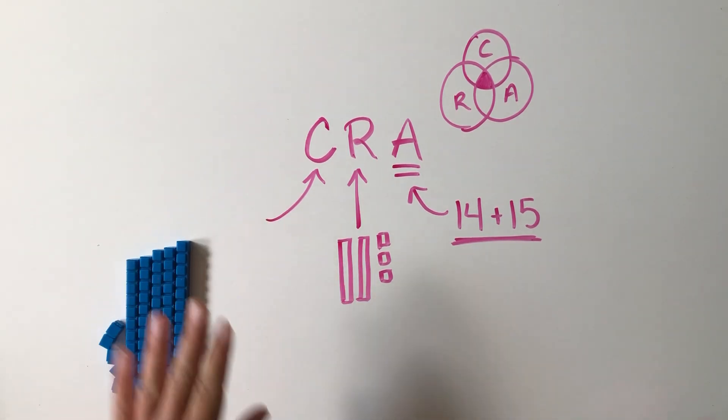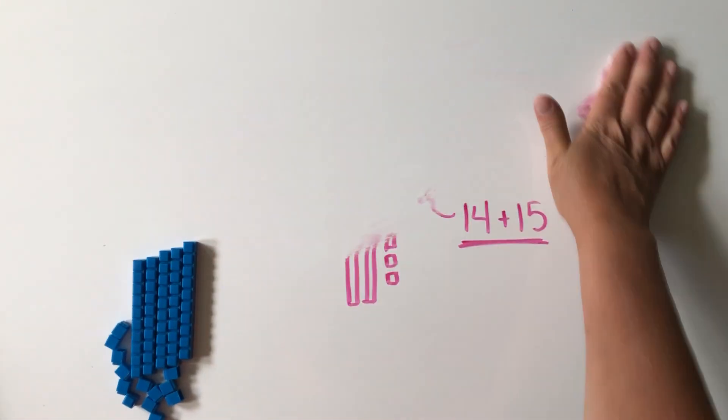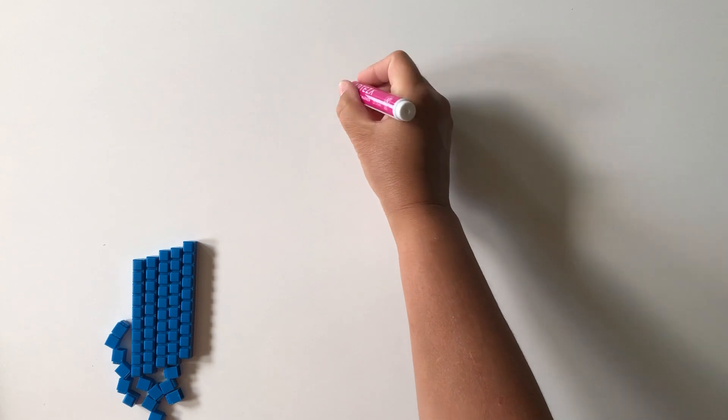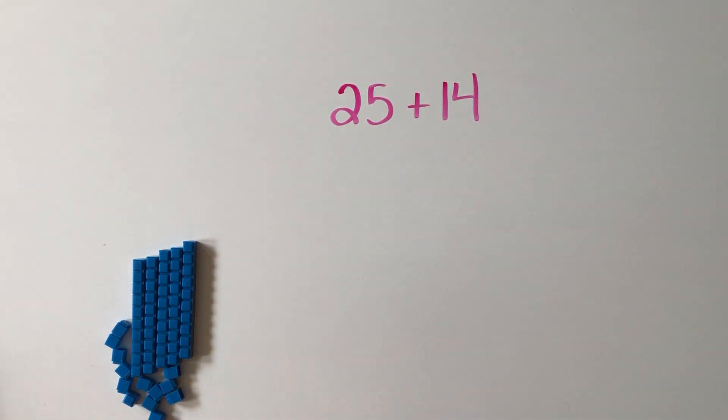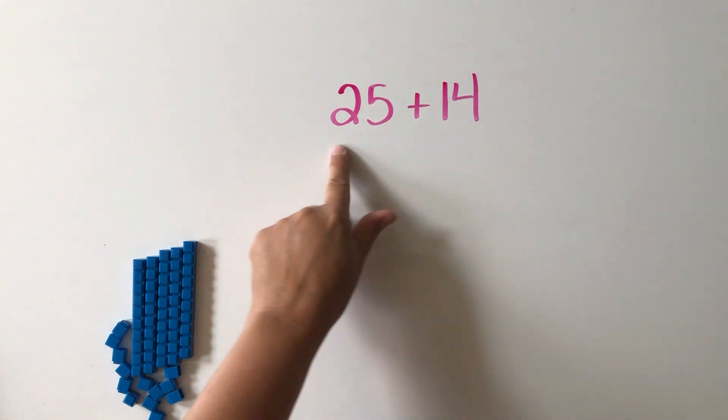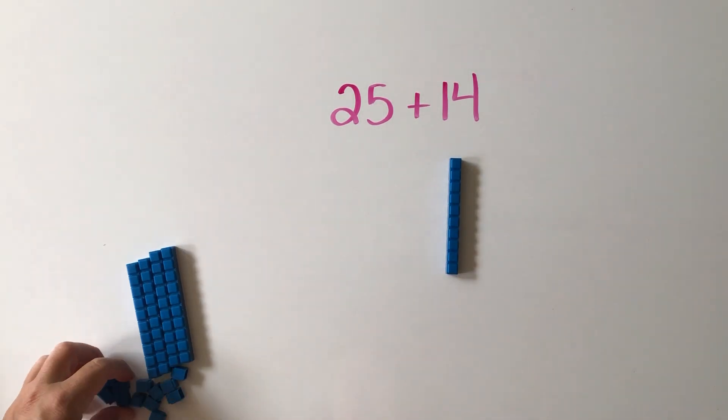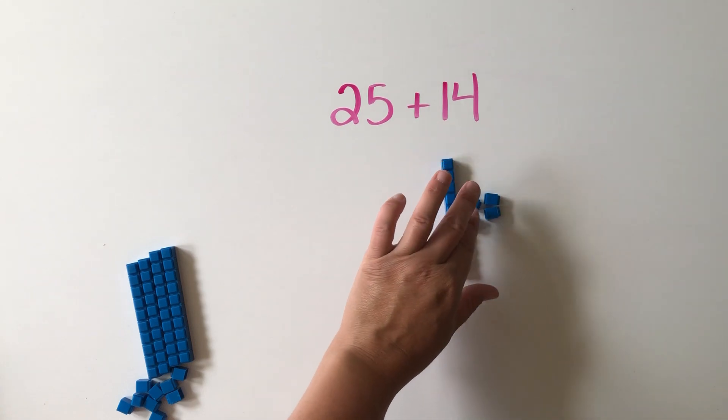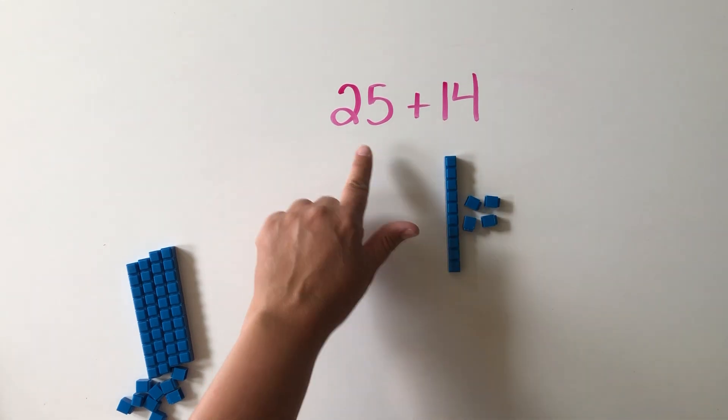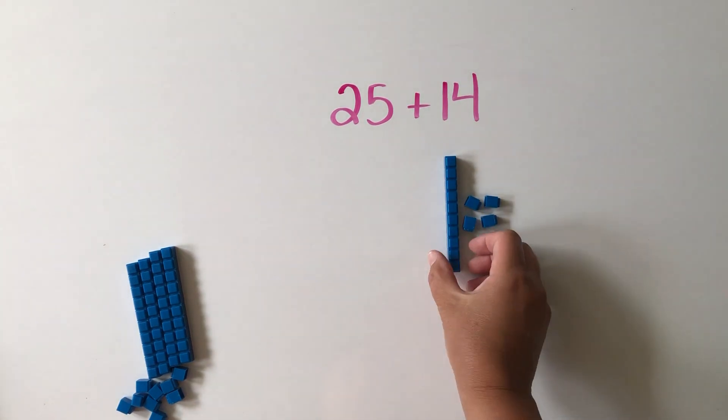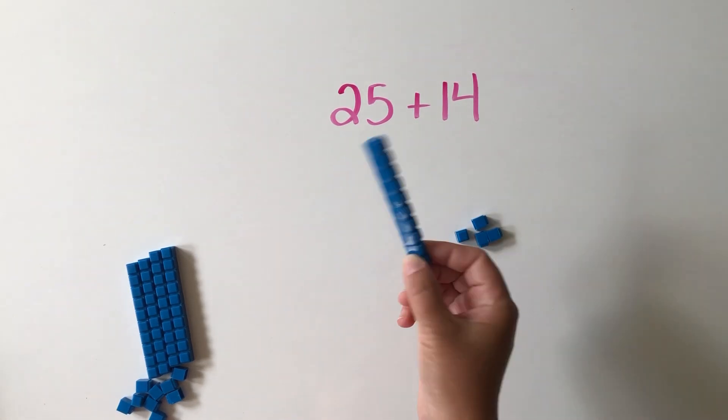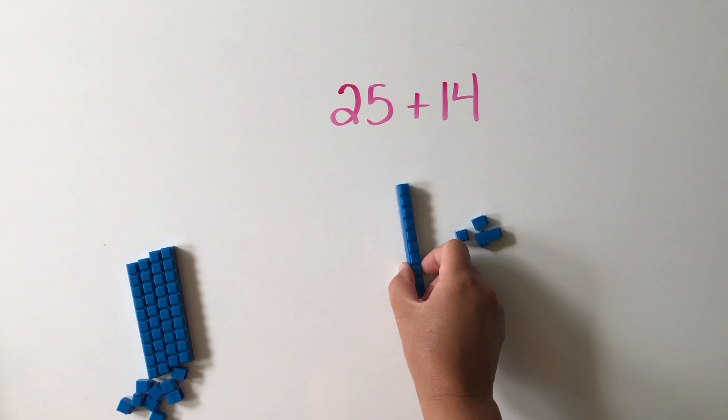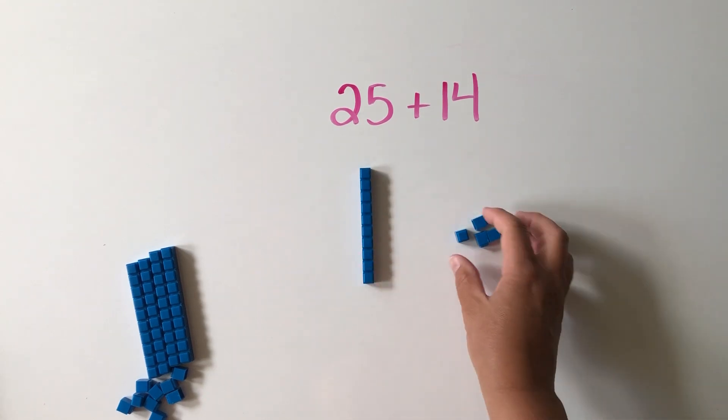Let's take a look at how we could use base tens to work with the break apart strategy. If we are solving 25 plus 14, we could choose one of the numbers to represent with base tens and start with 25. Then we could count up by place value. First we'll add the tens, so 25 plus 10 is 35, and then we'll add the four leftovers to make 39.